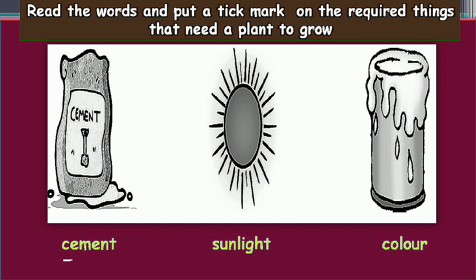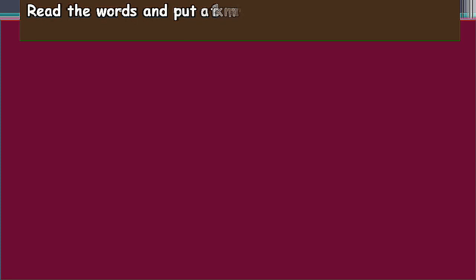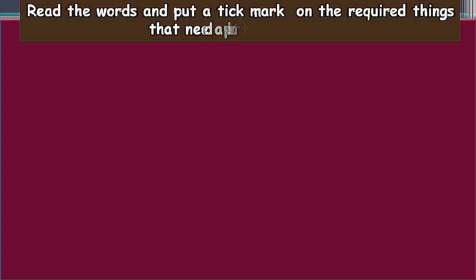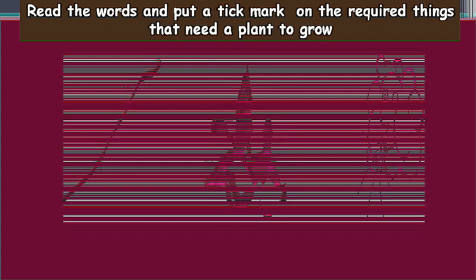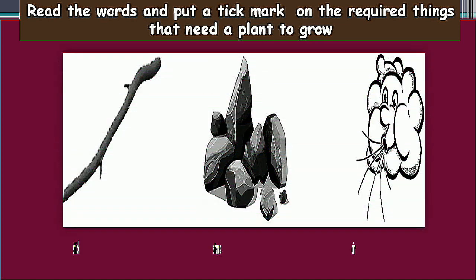Read the words and put a tick mark on the required things that need a plant to grow. Words related to pictures: cement, sunlight, color. Sunlight is the primary thing to grow a plant. Next, read the words: stick, stones, air. Air is the primary thing.